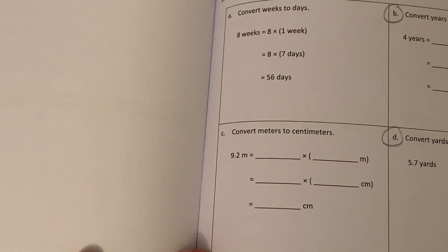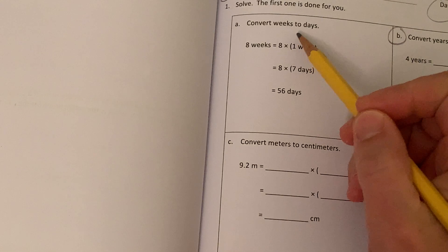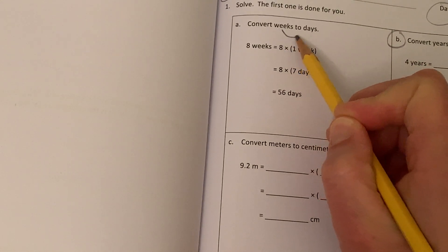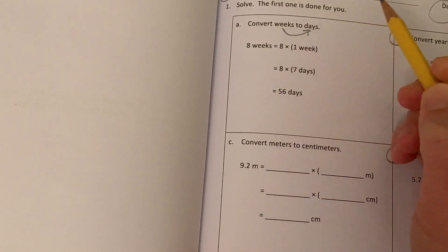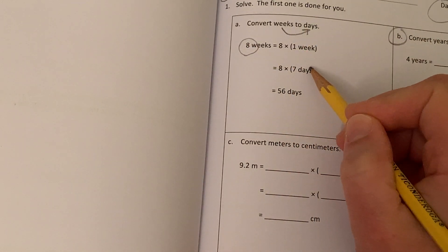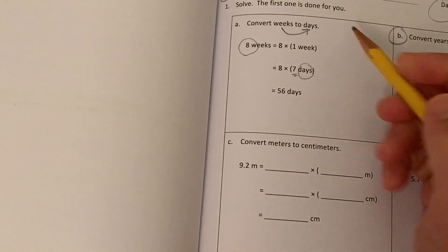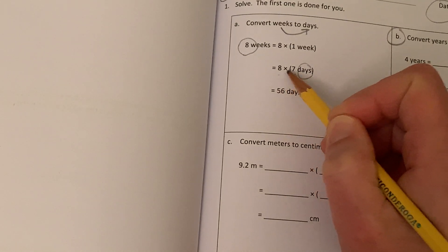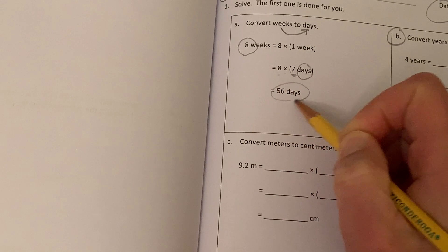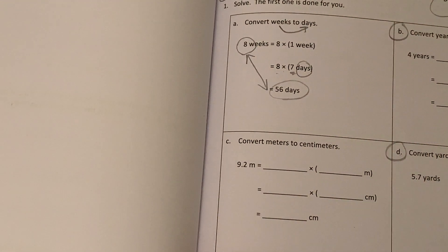So here's the example, just like we were doing in the warm-up together. This problem is converting weeks to days. So they gave us eight weeks, and they want to know how many days. And we know that there are seven days in a week. So you do eight times seven. 56 days is equal to eight weeks. So that one was done for us.